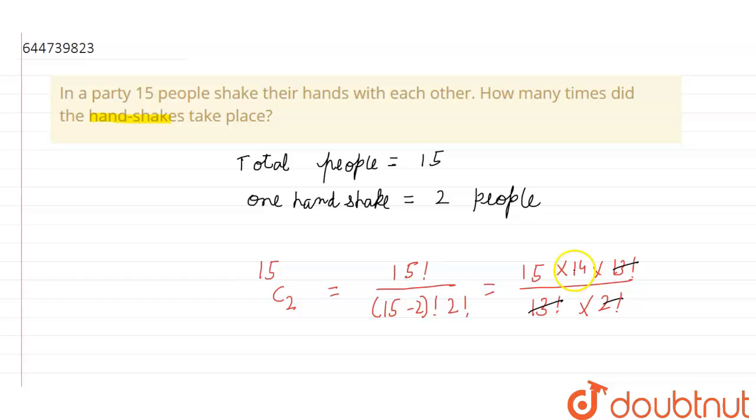So 15 into 14 divided by 2 gives us 15 times 7, which is 105. So our answer is 105.